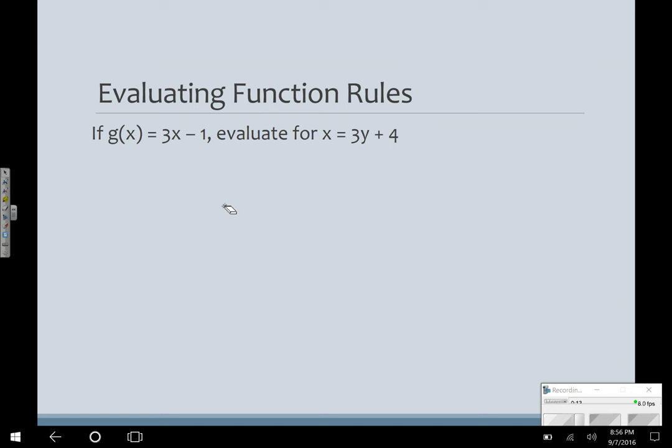Sometimes, we like to make it a little harder. And instead of just a number, we're going to put in a whole expression. So if g(x) = 3x - 1, evaluate x for 3y + 4. So g(x), and I'm going to substitute this in for my x over here. So 3 times (3y + 4). I'm going to distribute my 3. So 3 times 3y is 9y. And 3 times 4 is 12. So g(x) is going to be equal to 9y + 12. So that's just kind of an abstract concept. We'll talk more about that in class. We'll do more with that because I think you might need more practice.